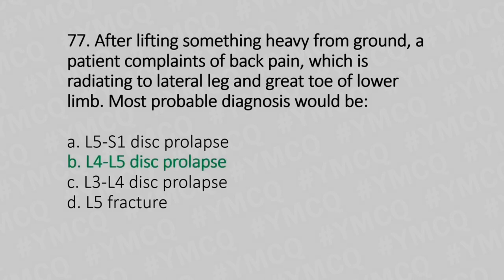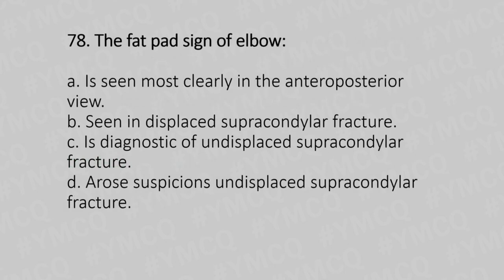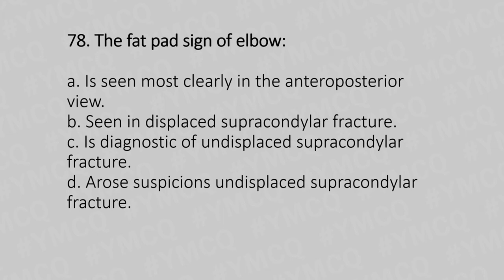Now let's move to question number 78. The fat pad sign of the elbow. Option A: is seen most clearly in the anteroposterior view. Option B: seen in displaced supracondylar fracture. Option C: is diagnostic of undisplaced supracondylar fracture. Option D: arouses suspicion of undisplaced supracondylar fracture. And the answer is Option D, arouses suspicion of undisplaced supracondylar fracture.